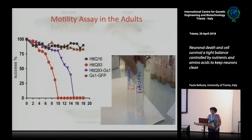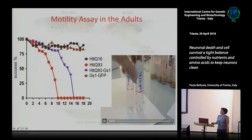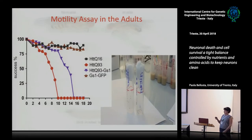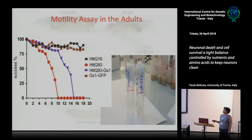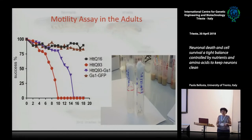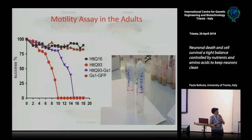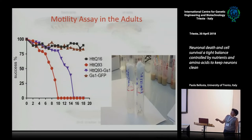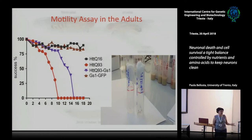We did the same things in adults using a climbing assay, which I also brought today to do if there's time. With Q93, 50% of flies will not climb after eight or nine days. With GS1 co-expression, they could actually be rescued to 12 or 13 days — which is a lot for a fly's life. Brain images show that wild-type flies look normal, while Drosophila expressing huntingtin have large parts of the brain missing. And this is actually the rescue — the same flies with huntingtin but also expressing GS1 show restored brain structure.